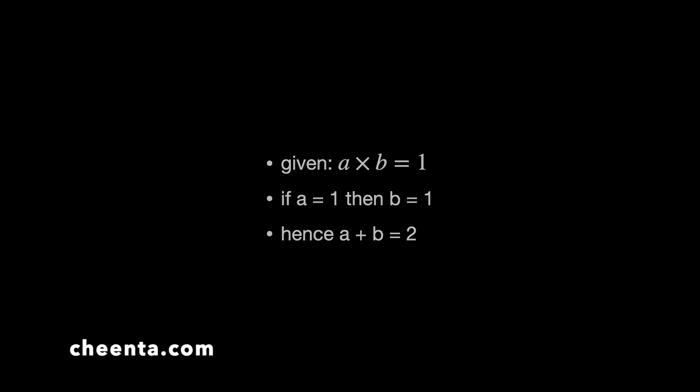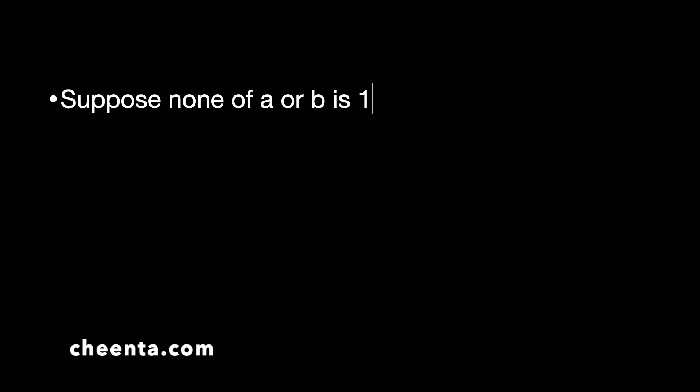So, we will assume that none of A or B is 1. Now, notice that both of them cannot be less than 1. Why? Well, if both of them are less than 1, then their product will be less than 1. But we know that the product of A and B is equal to 1. So, both of them cannot be less than 1.